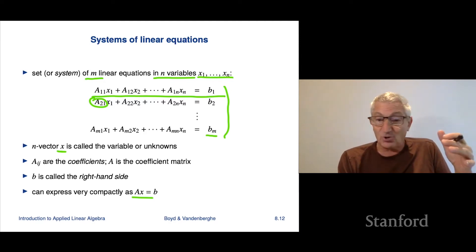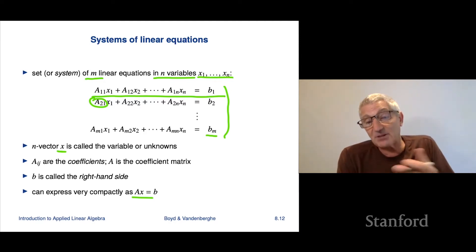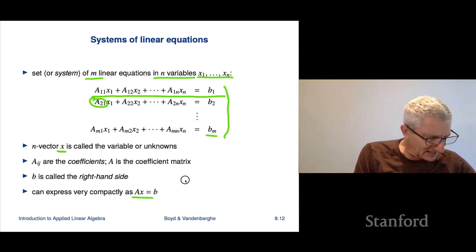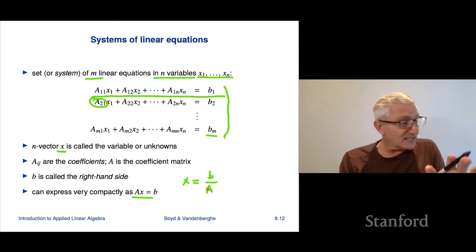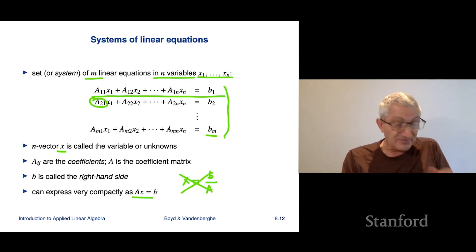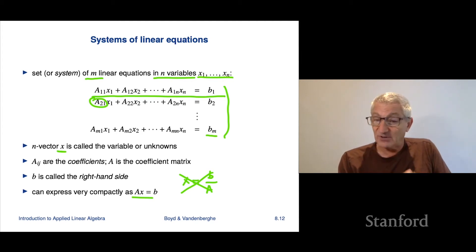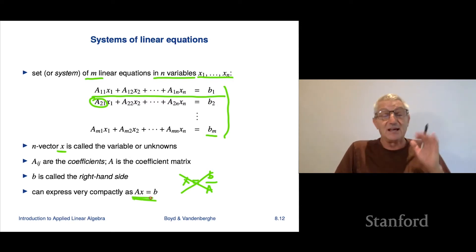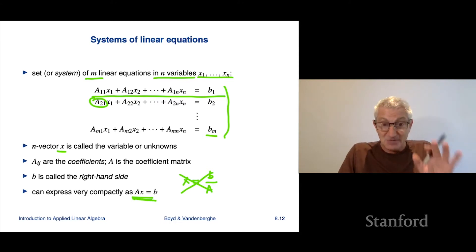This notation is supposed to evoke the same idea in another context. If a, x, and b are scalars, you would call this a linear equation, and the solution is simply x equals b over a — that's the case m equals n equals 1. Of course, that scalar division has no meaning when these are vectors and matrices; we'll see the correct analog later. For now, we're just talking about representing a set of linear equations beautifully and compactly with matrix notation. Ax equals b packs a lot of information.